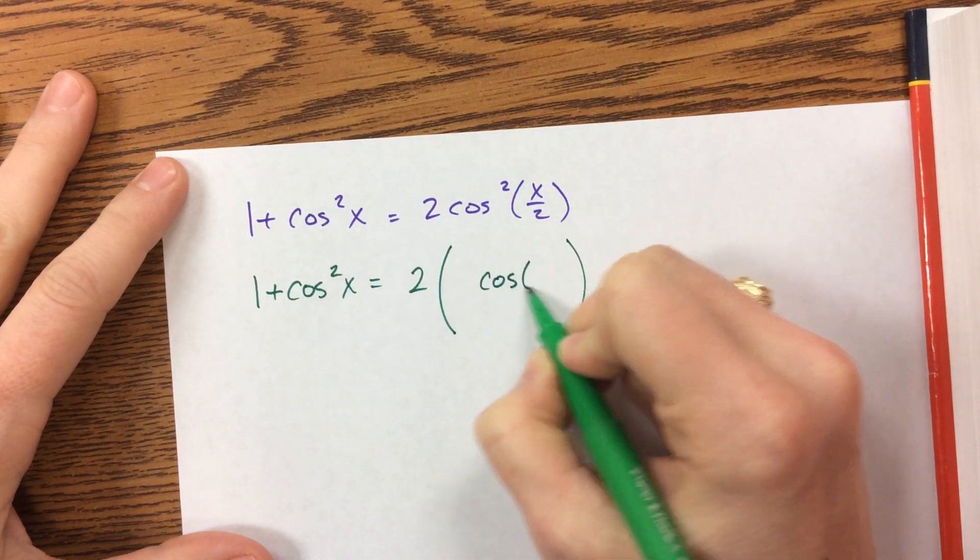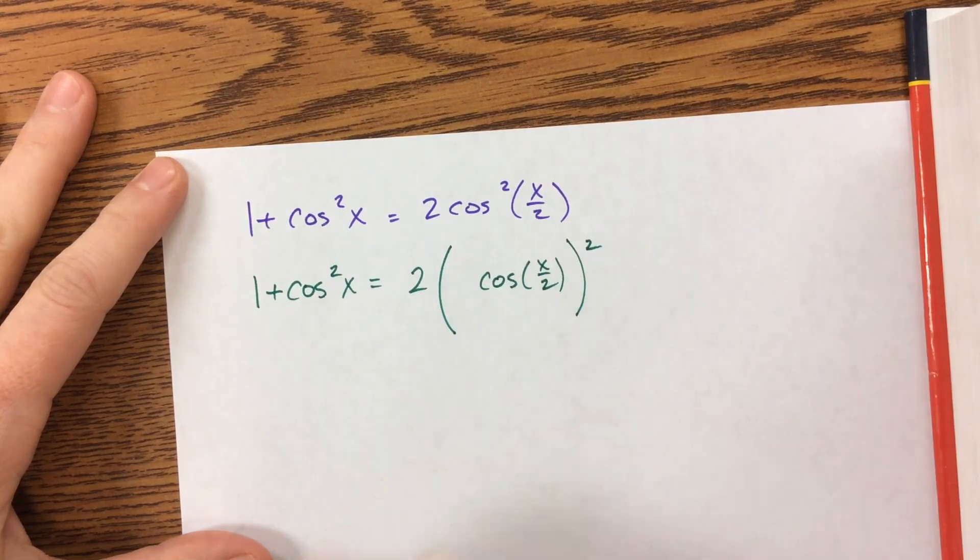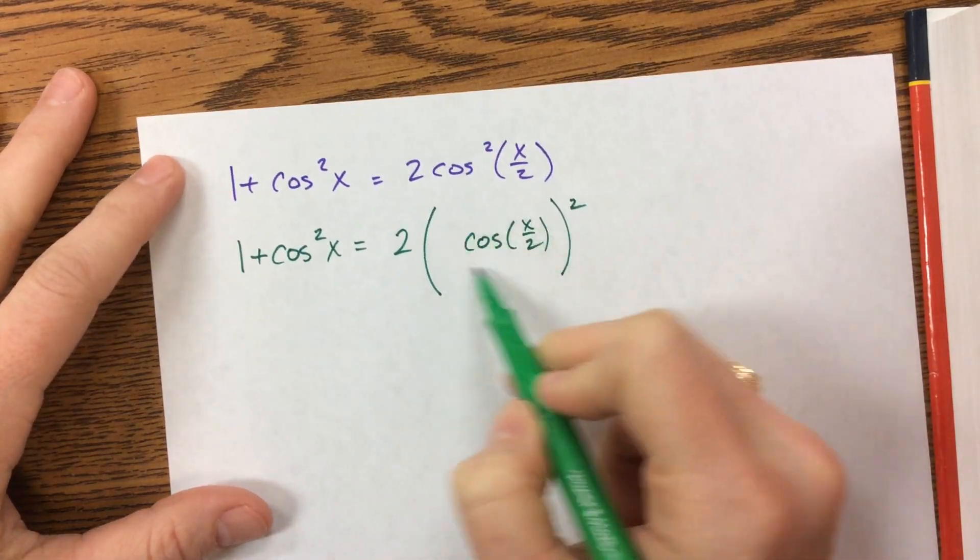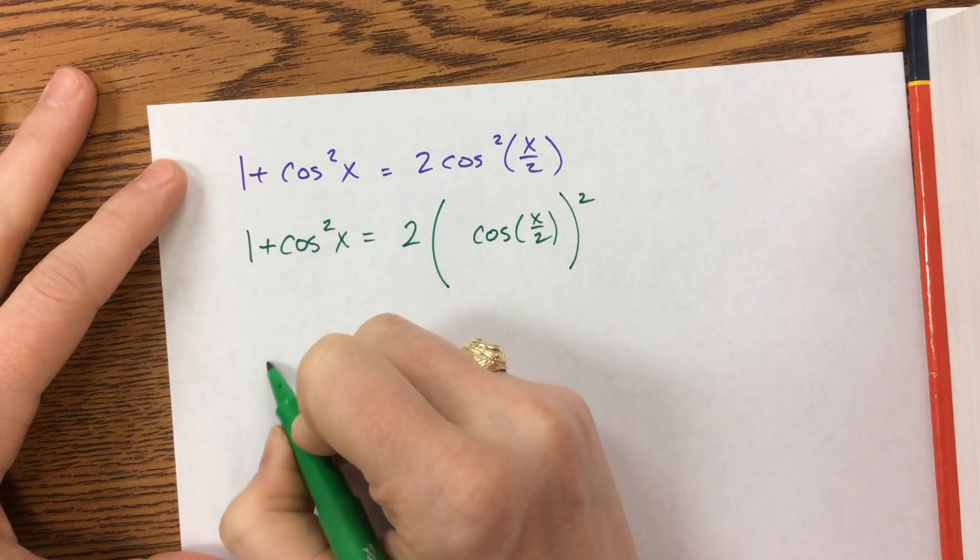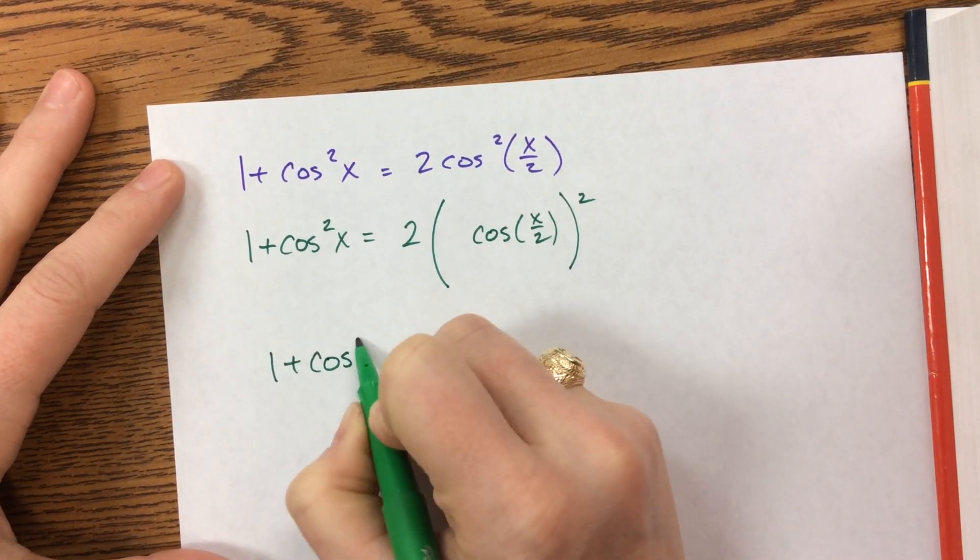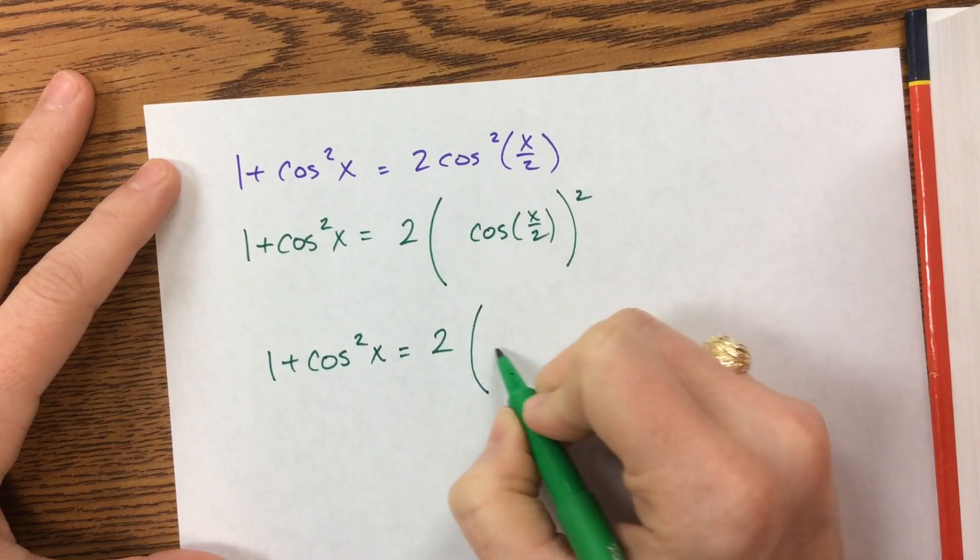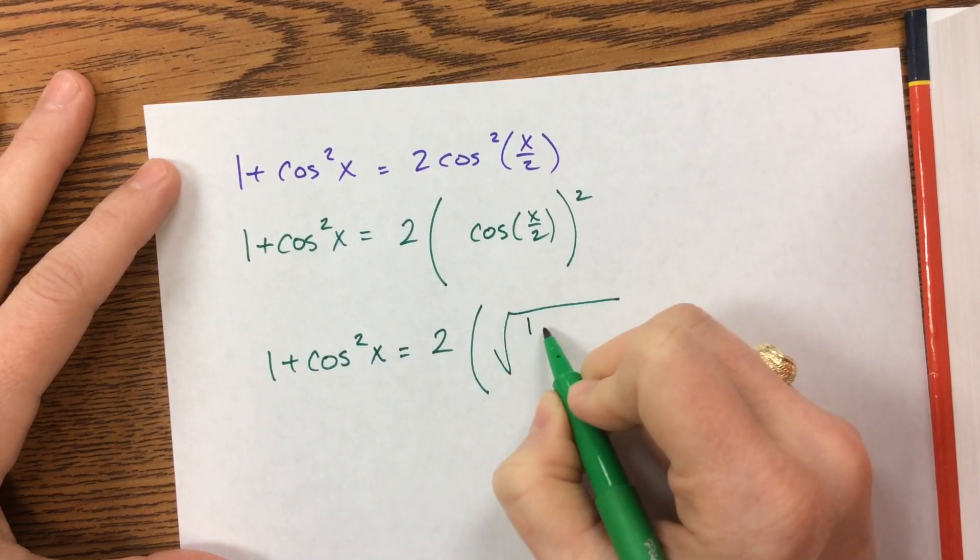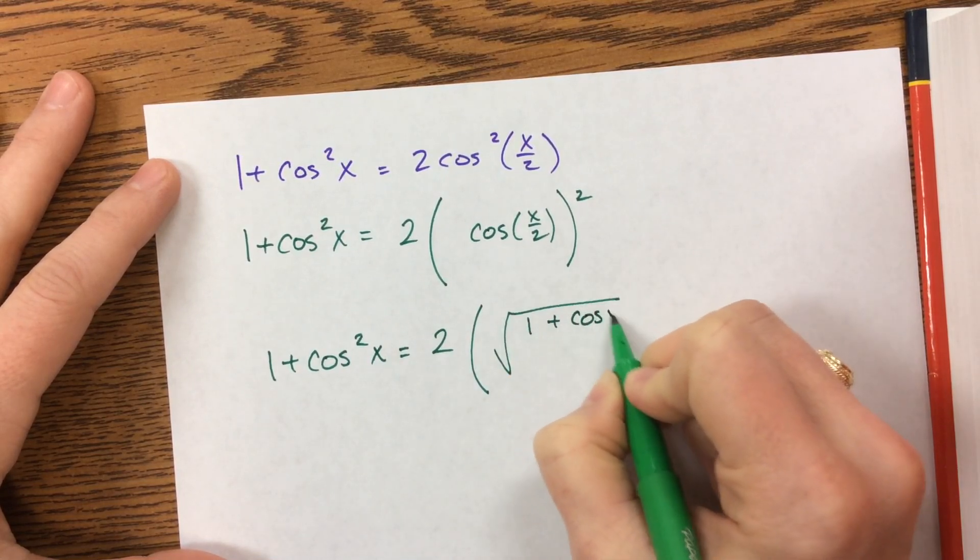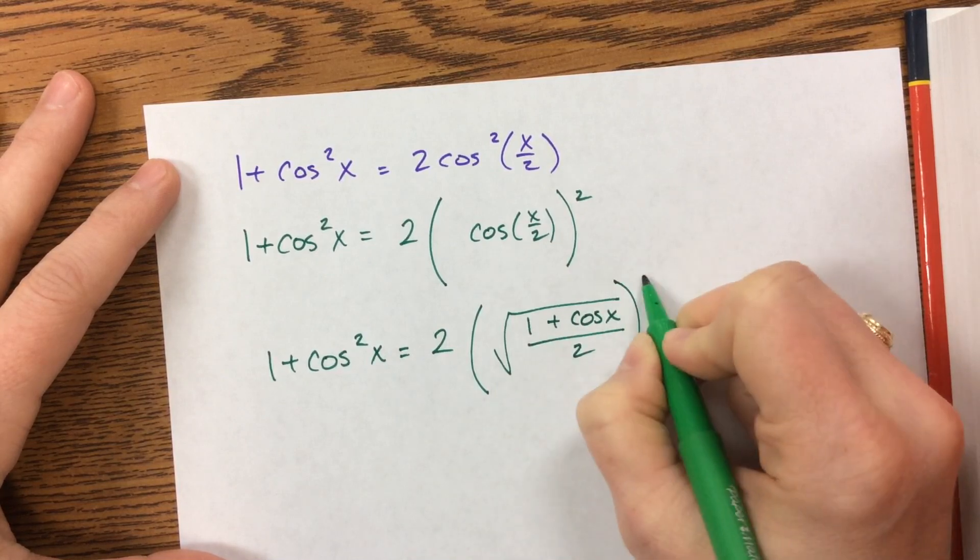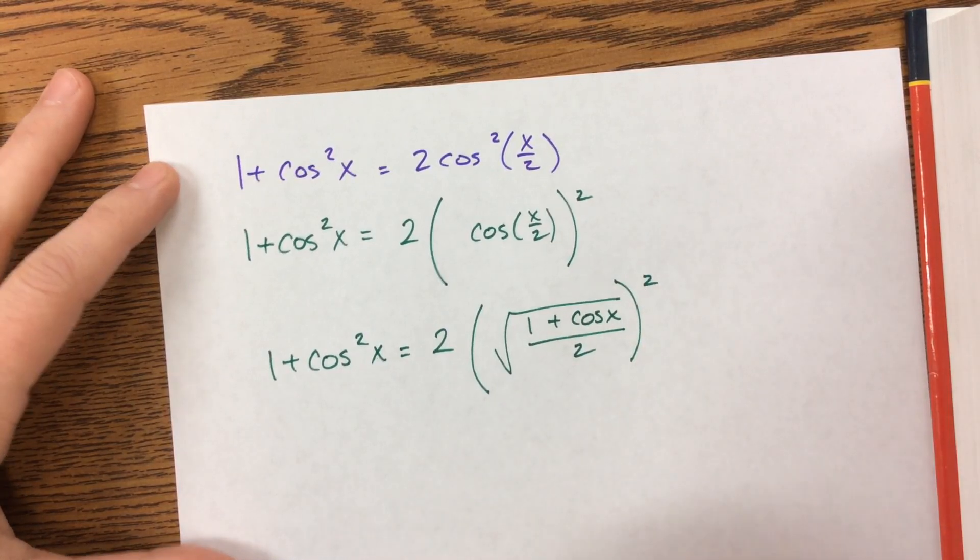So this is cosine of x over 2 squared. I have an identity for this, for cosine of x over 2. I don't have it in front of me, but I'm pretty sure I remember it. For whatever reason, I struggle to memorize the half-angle identities. But it's 1 plus cosine.